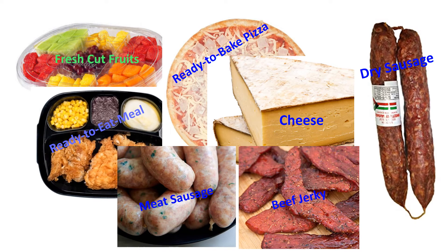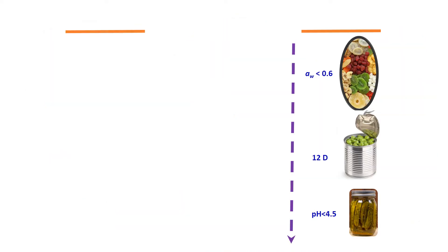The application I have provided earlier was just to understand the hurdle concept. In reality, the hurdle concept has evolved due to the progress of fresh-like minimally processed foods with low severity of hurdles for sensory and nutritional quality, long shelf life at room temperature or with mild chill conditions. For example, fresh cut fruits, ready to bake pizza, ready to eat meals, part baked bread, cheese, dried meat, and sauces.